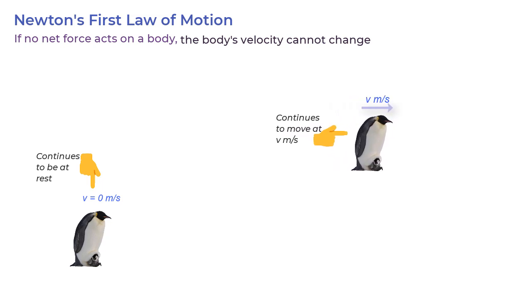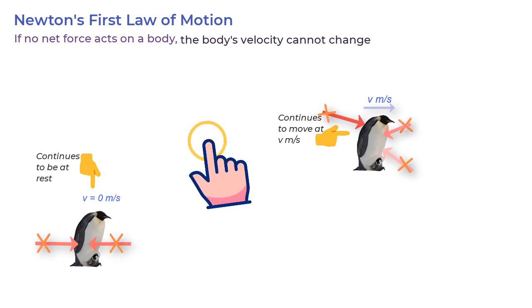Now, what is important to note is that the law says no net force. That means that either there is no force at all of any kind, or if there are multiple forces acting on the body, they should cancel each other to give zero force. And zero force therefore means zero acceleration. And zero acceleration means no change in velocity.